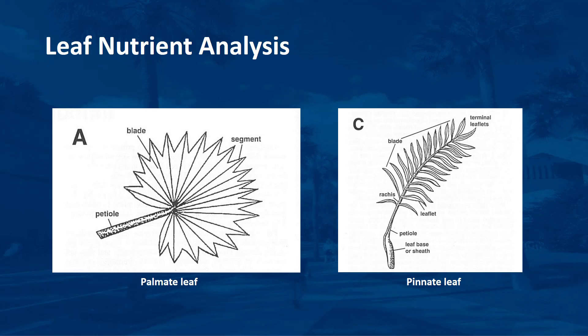In order to obtain useful results from a leaf analysis, the proper leaves must be sampled. Leaf nutrient analyses are based on samples consisting of several leaflets of pinnate-leaved palms or leaf segments of fan-leaved palms taken from the center of the youngest fully expanded leaf. Depending on the nutrient deficiency, this may or may not be the leaf exhibiting symptoms. In pinnate-leaved palms, the youngest fully expanded leaf should have all of its basal leaflets or spines expanded out and perpendicular to the petiole axis, as in older leaves.